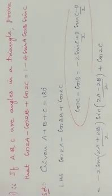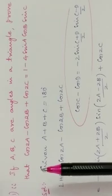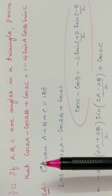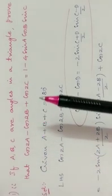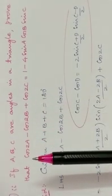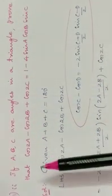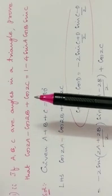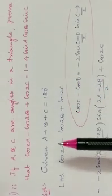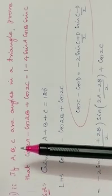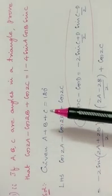Good morning, dear friends. To get a little more perfection in problems related to trigonometry up to transformations, let us move into this problem. If A, B, C are angles in a triangle, prove that cos2A - cos2B + cos2C = 1 - 4sinA·cosB·sinC. The hypothesis given is that A, B, C are angles in a triangle, so A + B + C = 180°.